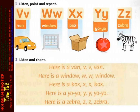Listening 66. Listen and chant. Here is a van. V. V. Van. Here is a window. W. W. Window.